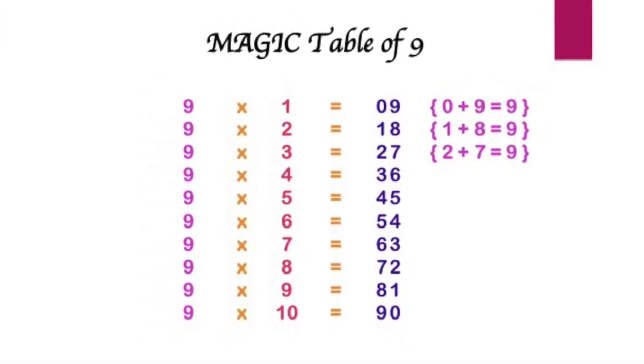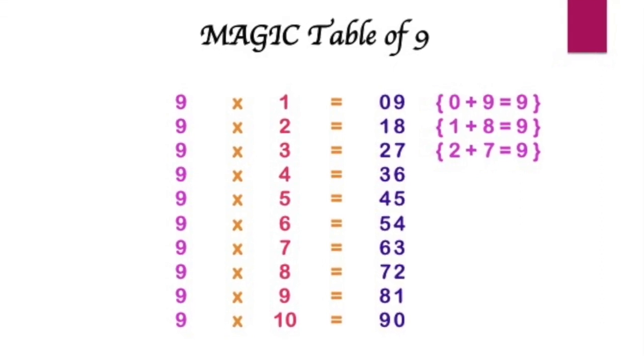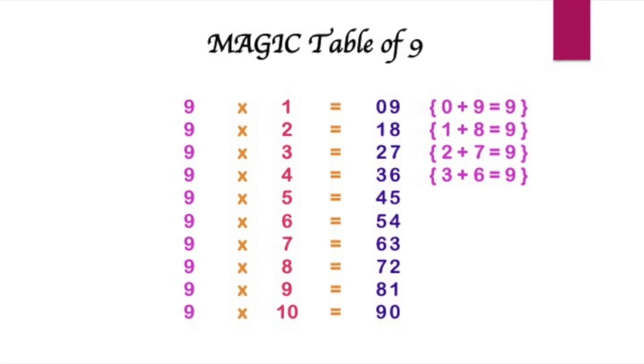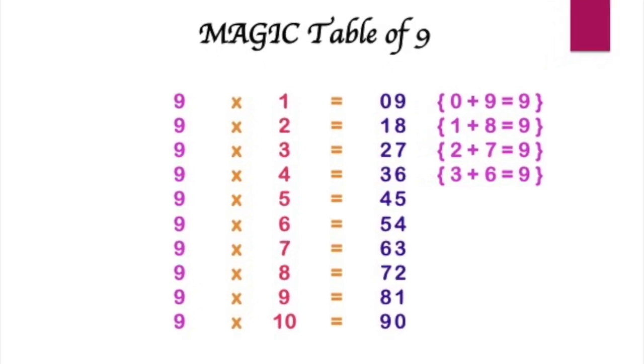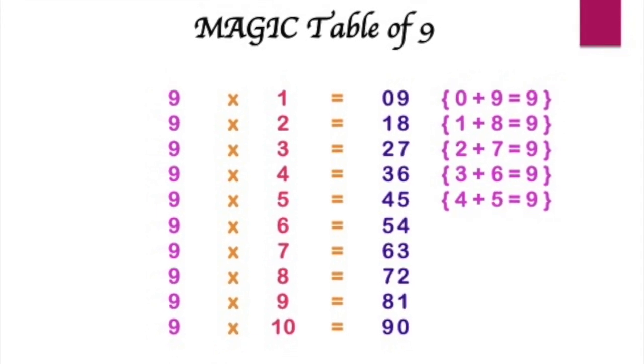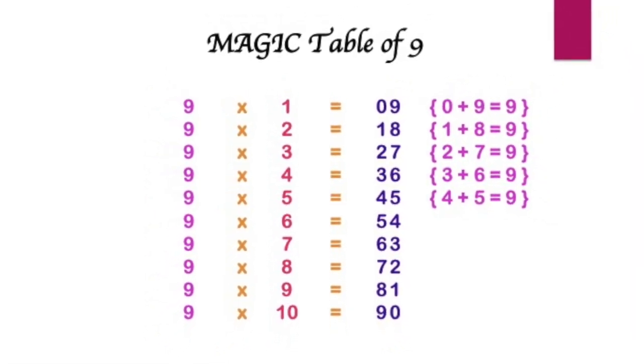Moving on, this can be seen with the third multiple of 27 as well, 2 plus 7 is 9. Then with the fourth multiple, 3 plus 6 is again a 9. And with the fifth multiple, 4 plus 5 is a 9.